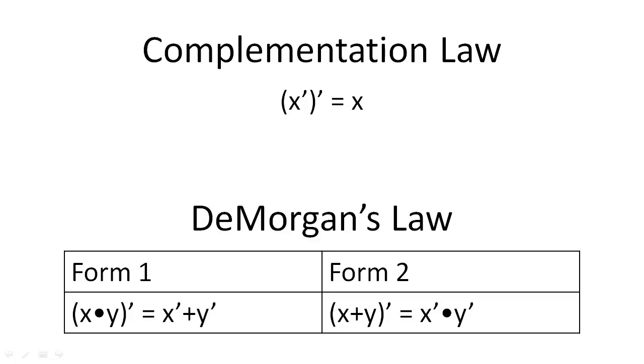De Morgan's Law is more complex, and it states that if we complement an AND or OR operation, then we can alternatively write that Boolean expression by complementing the literals and swapping the AND for an OR, or vice versa.